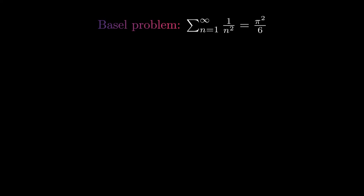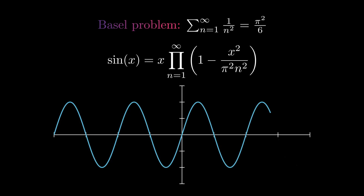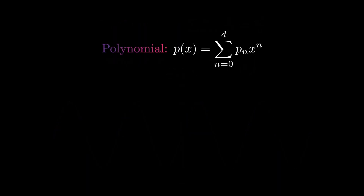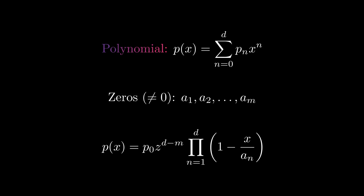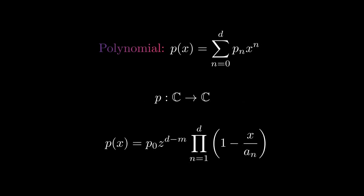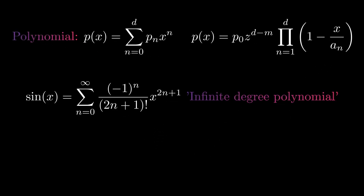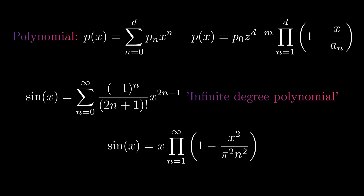When solving the Basel problem, Euler used a formula for the sine as an infinite product. He justified this as for polynomials, it is always possible to write them as a product involving their zeros. However, some zeros can be in the complex numbers, so it's natural to interpret polynomials as functions from the complex numbers to the complex numbers. Now sine is kind of a polynomial of infinite degree, as there is a representation by a power series. So, similar to polynomials, there should be a factorization involving the zeros. Here the zeros are all the integer multiples of pi.